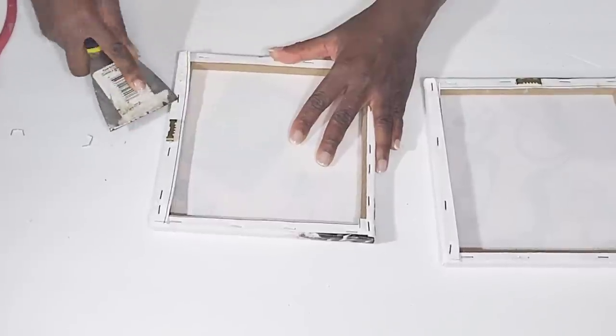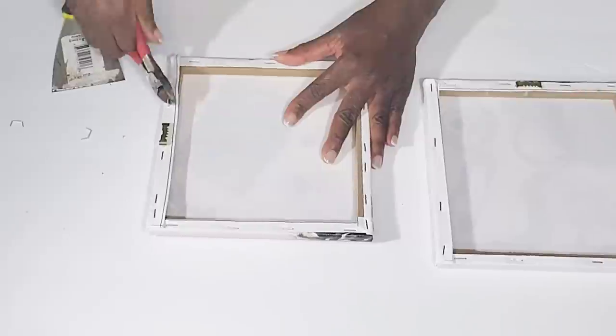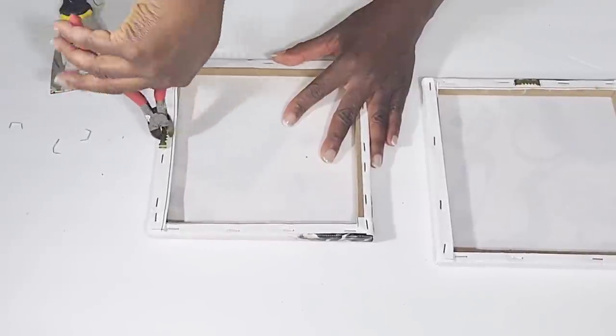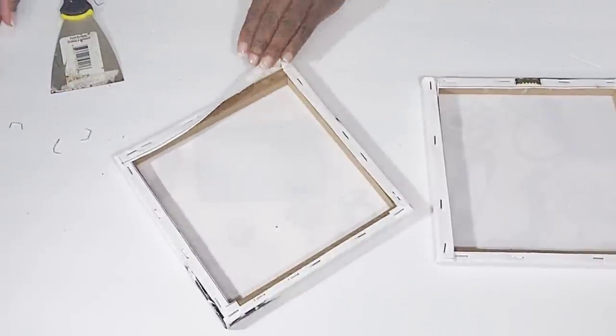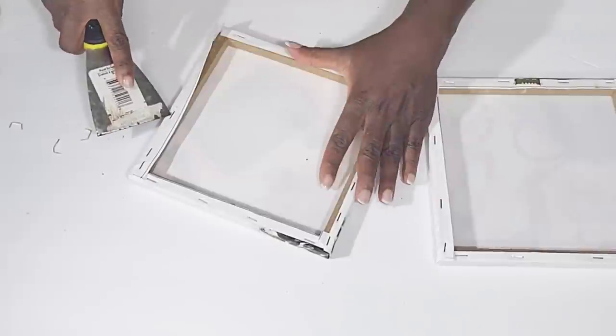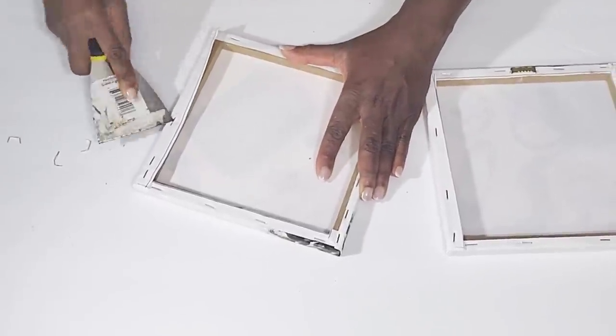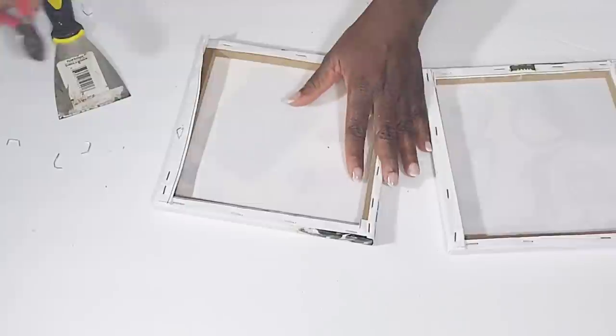I am removing the canvases from the wood frames, just like I did in the previous DIY. Those hooks that I remove, I always keep those because I can always use those when I'm creating another sign.